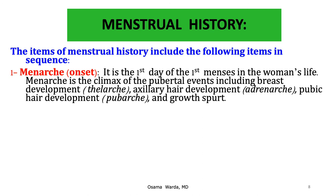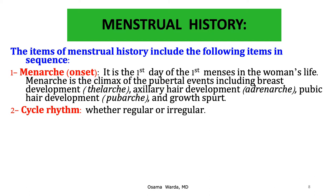The items of menstrual history include the following in sequence. Menarche is the first day — the onset of the first menses in a woman's life. It is the climax of pubertal events including thelarche, which is breast development; adrenarche, which is axillary hair development; pubarche, which is pubic hair development; and the ongoing growth spurt.